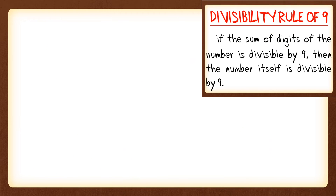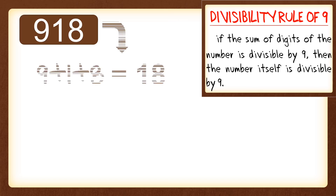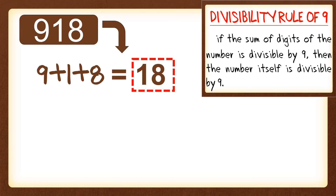Let's try another example: 918. Get the sum of the digits: 9 plus 1 plus 8, and we get the sum of 18. Determine if it is a multiple of or divisible by 9 — 18 is a multiple of 9, so 918 is divisible by 9.